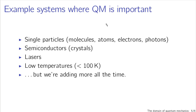Lasers are another situation where quantum mechanics is crucially important — without quantum mechanics there would be no lasers. And finally, if you're talking about very low temperature physics, temperatures less than about 100 Kelvin, those are going to be quantum mechanical as well. So single particles, weird materials, crystals, lasers, low temperatures — they're an exotic set of phenomena, but we're adding more all the time. Quantum mechanics allows us to do things that we wouldn't be able to do in the classical world, so it's in our best interest to push quantum mechanics as far as we can take it.